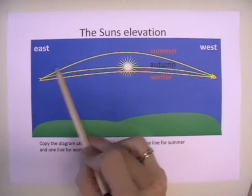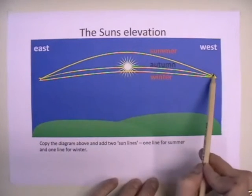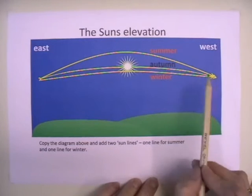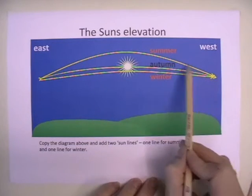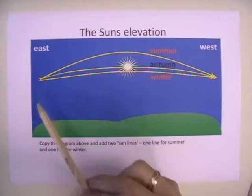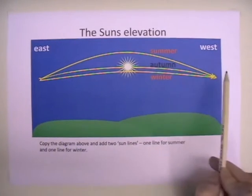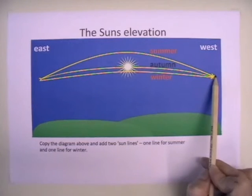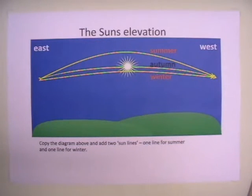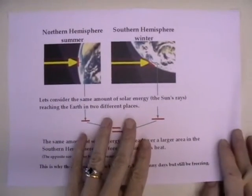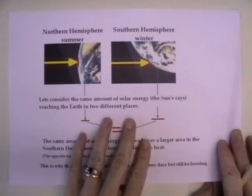We perceive the sun as moving from east to west because we are actually rotating in an anticlockwise direction — that is, from west to east. So we say the sun rises in the east and sets in the west. The result of this is that we have different concentrations of sunlight during our summer and our winter.